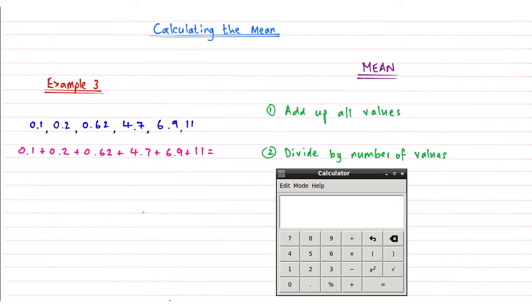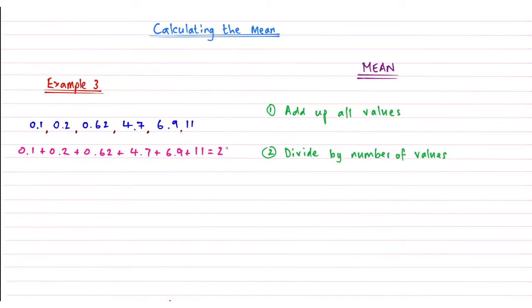Okay, so we're going to add these together. Again, we're going to use my trusty calculator. So 0.1 added to 0.2, add 0.62, plus 4.7, plus 6.9, plus 11. And that gives me a total of 23.52. So we'll write that down there.